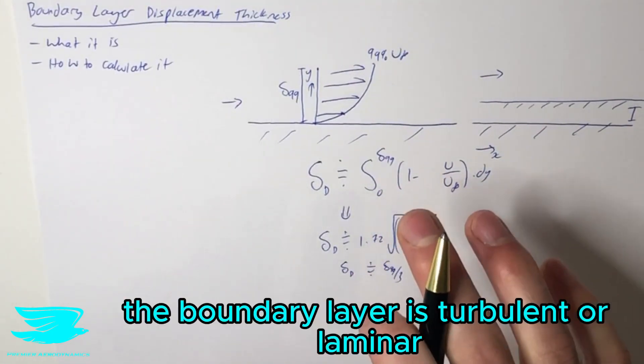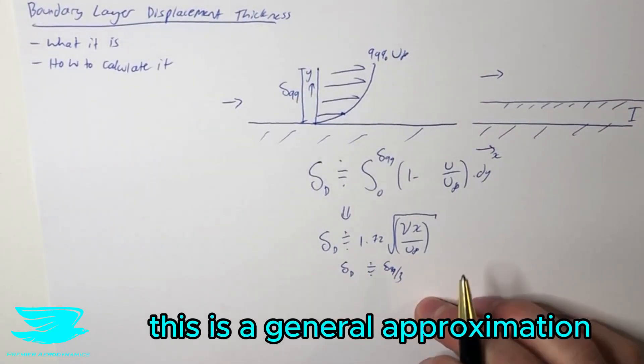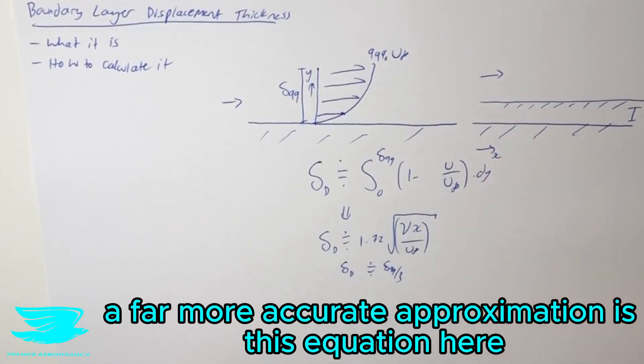It actually changes whether the boundary layer is turbulent or laminar, and also the progression of it. But this is a general approximation. The far more accurate approximation is this equation here.